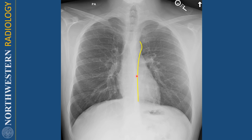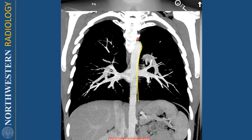We'll talk more about that concept when we talk about the silhouette sign in class. Here's the corresponding CT image showing the aortic arch and the descending aorta. It's important to remember that the descending aorta is a posterior structure in the chest.